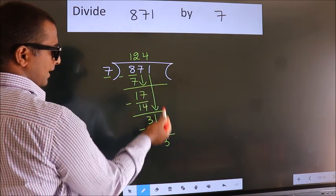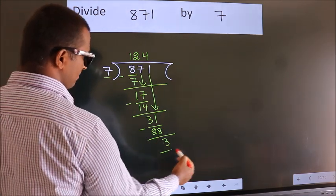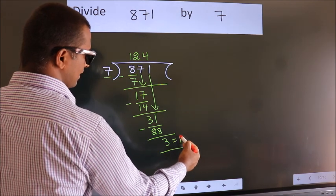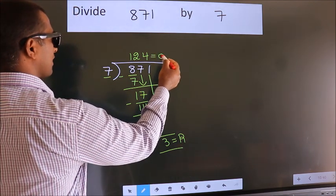No more numbers to bring down, so we stop here. This is our remainder. This is our quotient. Thank you.